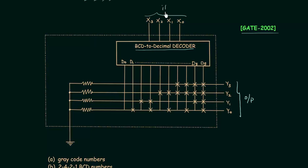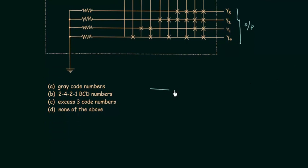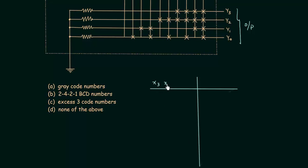x3 to x0 are the inputs and we are dealing with a BCD number. In BCD we have 10 possible combinations because decimal numbers range from 0 to 9. I will make the table quickly. The four inputs to this table are x3, x2, x1, x0, and the outputs are y3, y2, y1, y0. I will write down all possible combinations and then find the outputs.